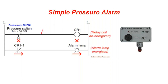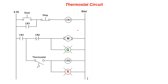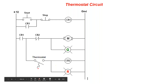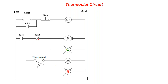Another example: a simple pressure alarm circuit. There's a relay with a normally closed circuit, keeping a lamp on at all times. When pressure is reached, it engages the relay, which breaks that circuit. Similarly, in a thermostat circuit — something we see every day in our houses — pressing start seals in the contact and runs a motor with a green light on. When the thermostat reaches temperature, it turns on CR2, whose normally closed contact opens, disengaging the motor.